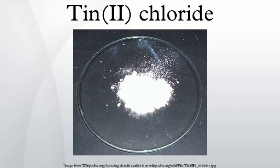Tin chloride, also known as stannous chloride, is a white crystalline solid with the formula SnCl2. It forms a stable dihydrate, but aqueous solutions tend to undergo hydrolysis, particularly if hot. SnCl2 is widely used as a reducing agent and in electrolytic baths for tin plating.